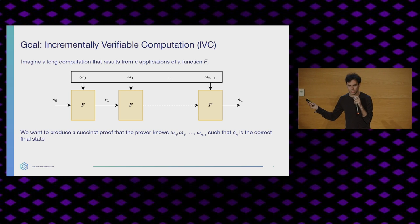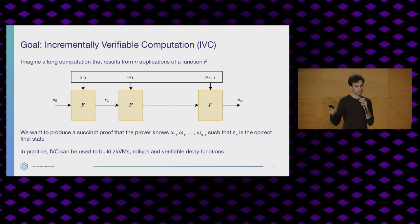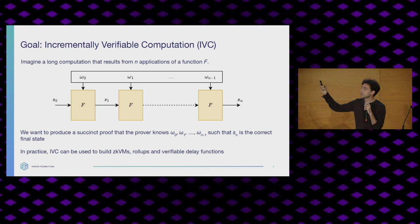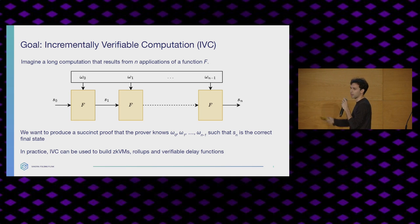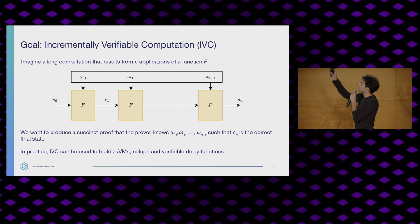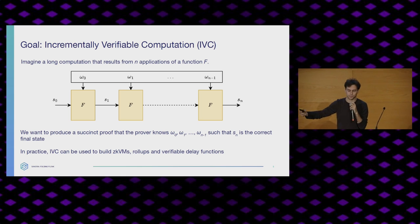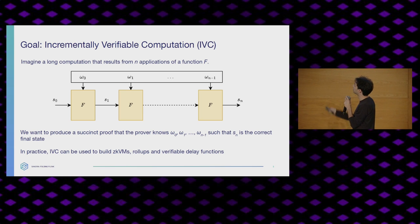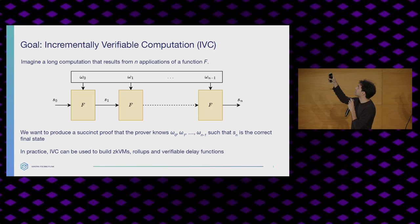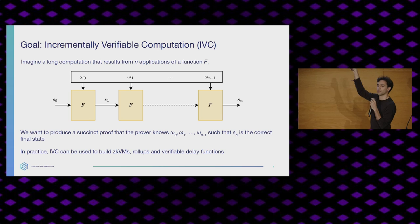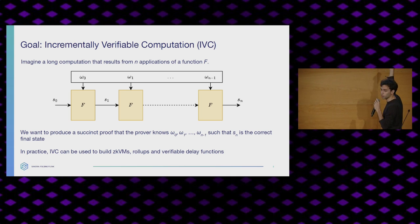What can we build with this? Why is this useful? It turns out if f is one cycle of a microprocessor — say RISC-V, ARM, whatever you want — this iterated approach to f is actually running the processor. We could also do rollups with this: if s is the state of a blockchain and the omegas are incoming transactions and your function f is the transition function from one state to the next, we now have a rollup — a succinct proof of many, many blocks.